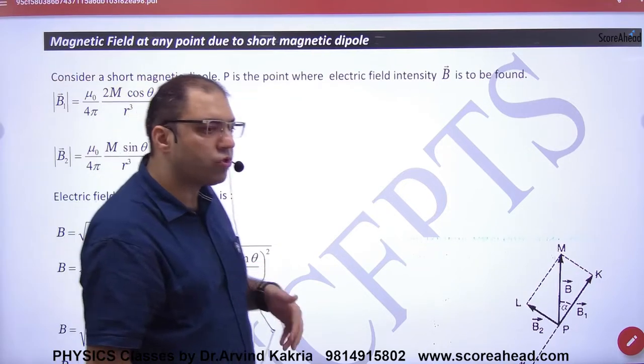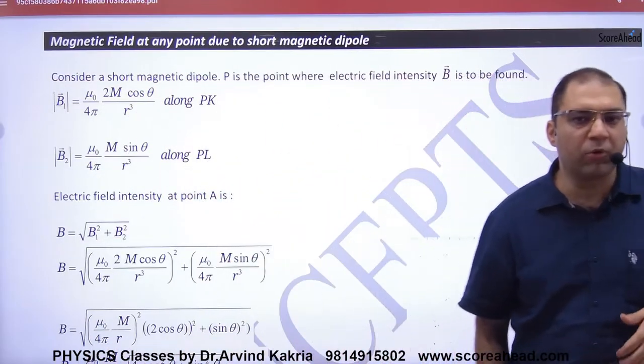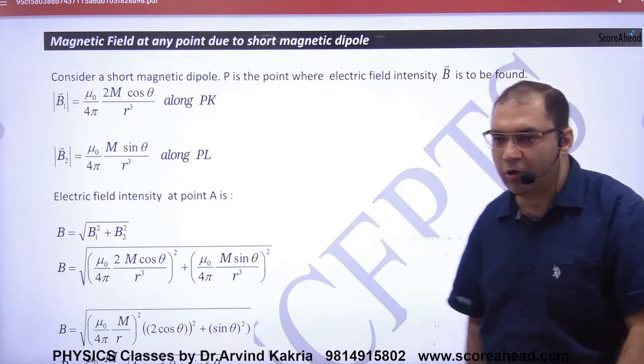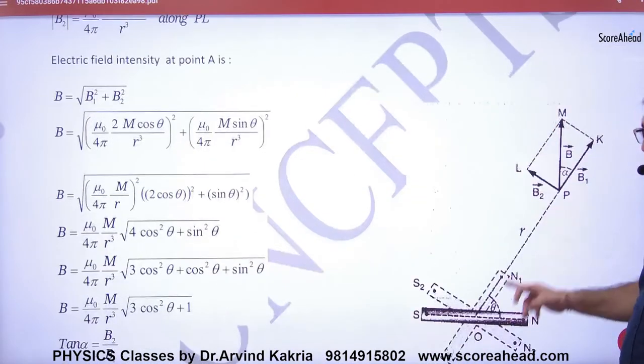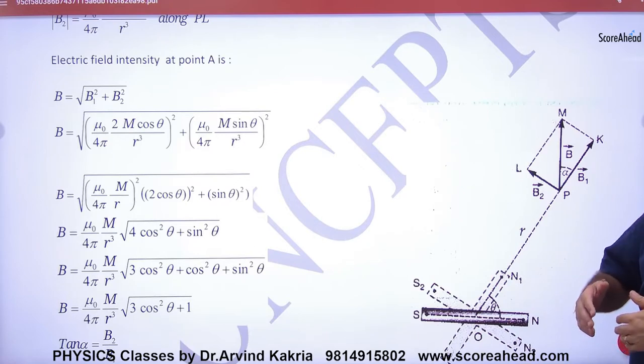Magnetic field at any point due to short magnetic dipole. Remember in electrostatics we had done this topic - it's a dipole and we had E at any point. We had found E at any point, we had found B at any point.